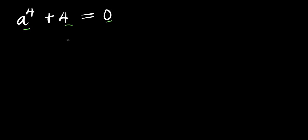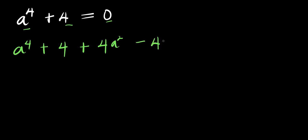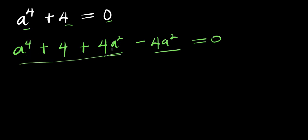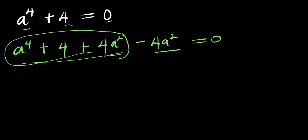What we are going to do is apply a trick. We have a⁴ + 4, then we add 4a² and also subtract 4a². We are adding 4a² and subtracting it again — we are effectively adding 0 — and we use this trick in order to get to the solution we are looking for.